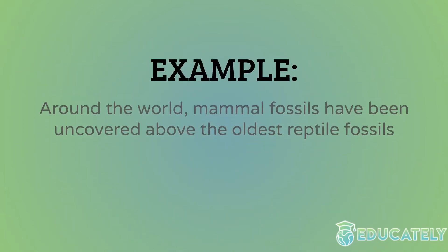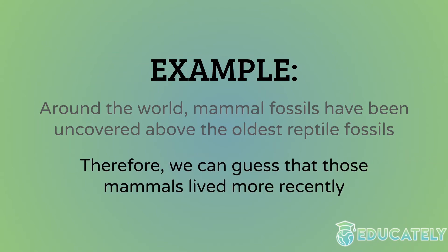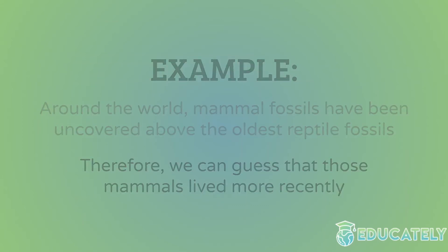For example, around the world, mammal fossils have been uncovered above the oldest reptile fossils. Based on the law of superposition, we can guess that those mammals lived more recently and were preserved more recently because they were found at less deep depths. This is a simplification, but it's a general truth — the oldest mammals are definitely younger by hundreds of millions of years than the oldest reptiles.